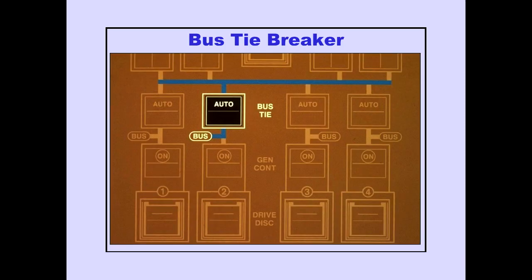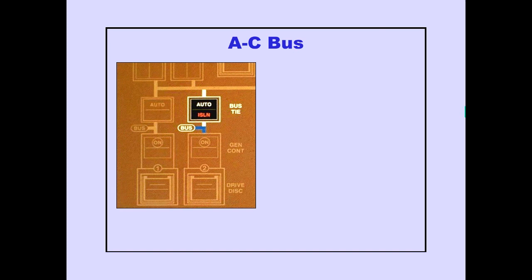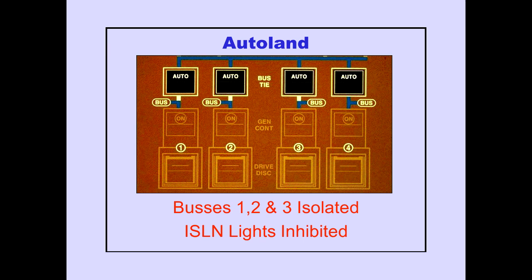A bus tie breaker connects each AC bus to the synchronous bus. Pushing the bus tie switch to auto allows the bus tie breaker to close and connect the AC bus to the synchronous bus if power quality on the AC bus is acceptable. The amber AC bus isolation light illuminates if the bus tie breaker is automatically open due to a fault on the AC bus, or when the bus tie switch is pushed off. During an auto land, bus tie breakers 1, 2, and 3 are automatically open to provide independent power sources for each autopilot. AC bus 4 continues to power the synchronous bus for backup. In this situation, the isolation lights are inhibited.